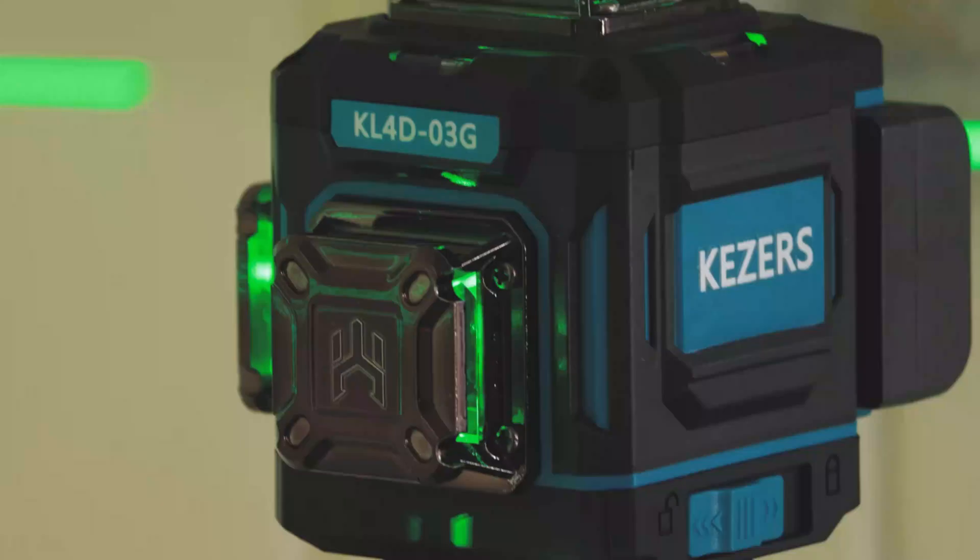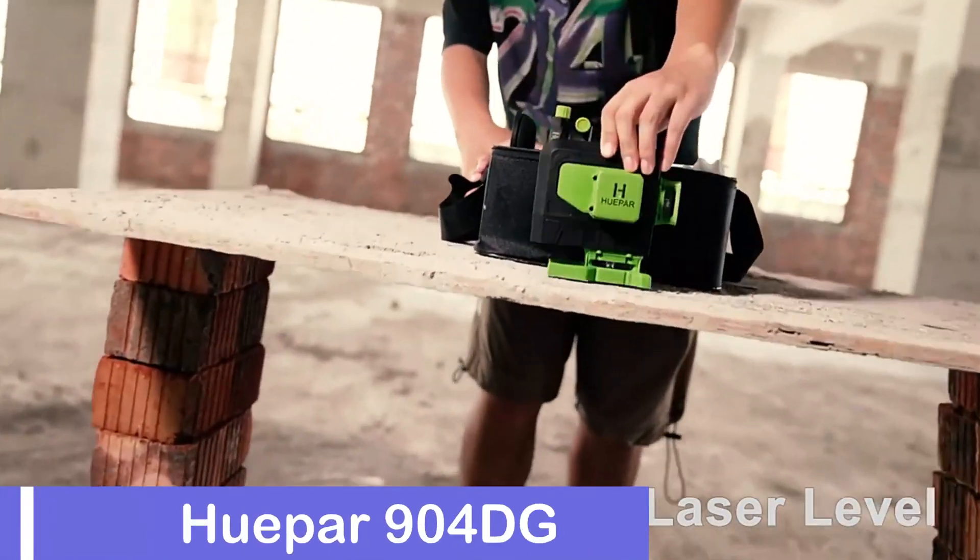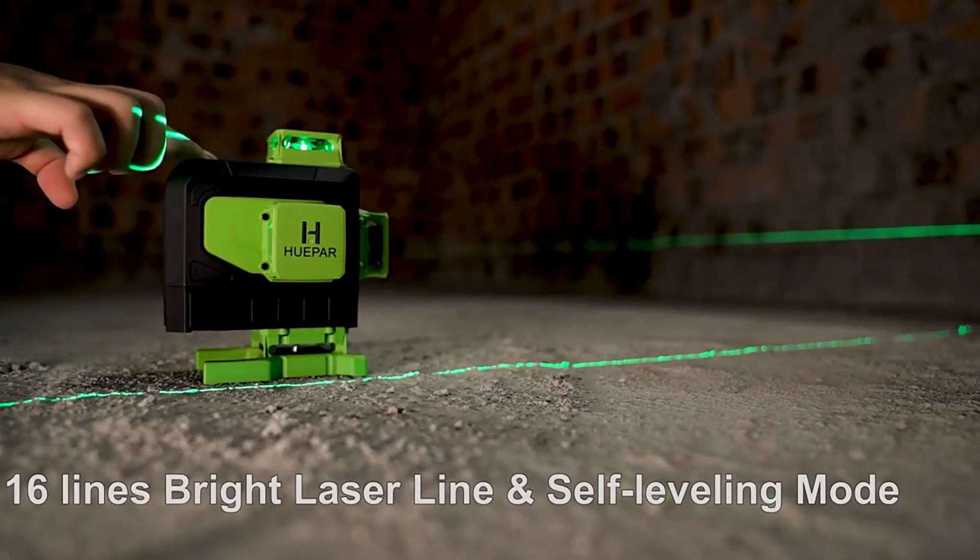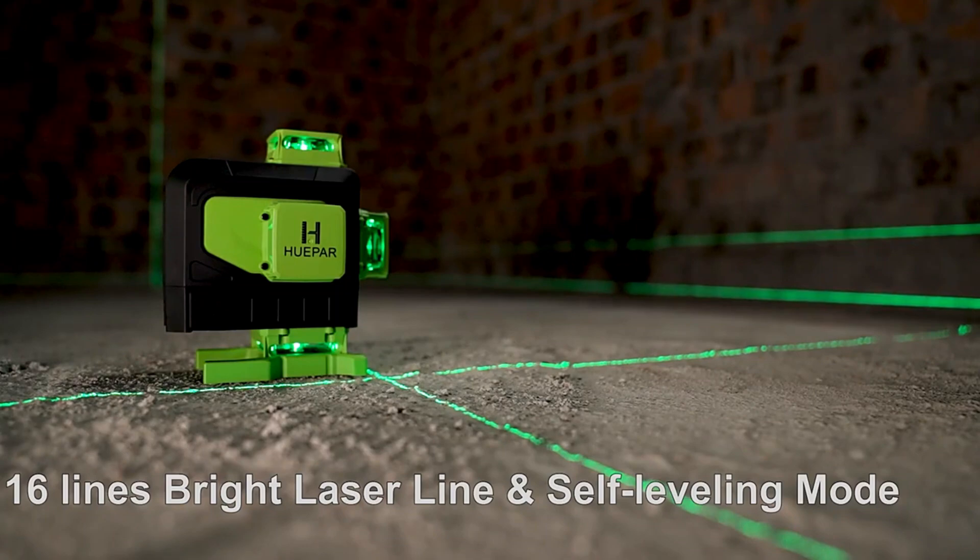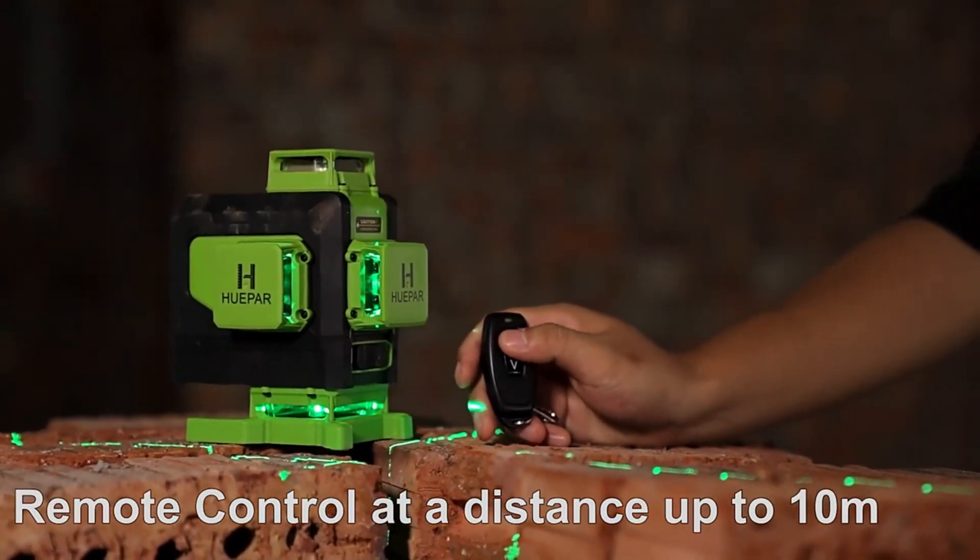Okay, so let's get started with today's video. Number 5, Hueper 904DG Laser Level. The Hueper 904DG is a precision laser level with an impressive accuracy of plus or minus 1/9th inch at 33 feet, making it ideal for tasks like aligning tiles, installing shelves, or framing a room.